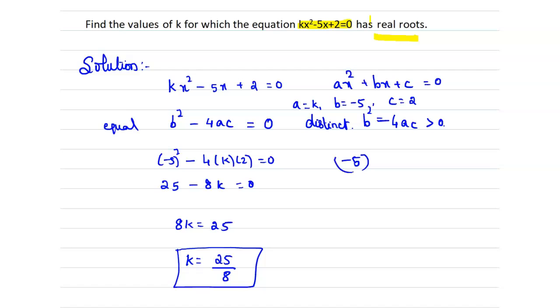So substitute the values here. We will get (-5)² - 4(k)(2) > 0. Which implies 25 - 8k > 0 which implies 25 > 8k. So k < 25/8.